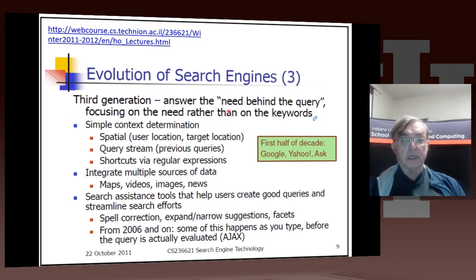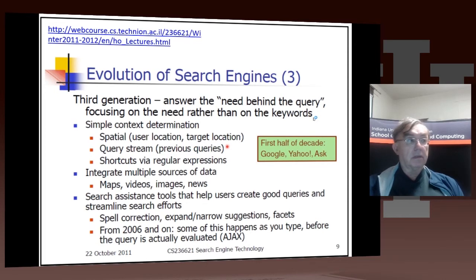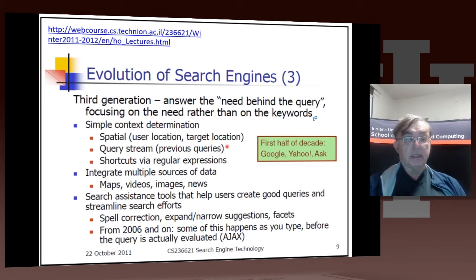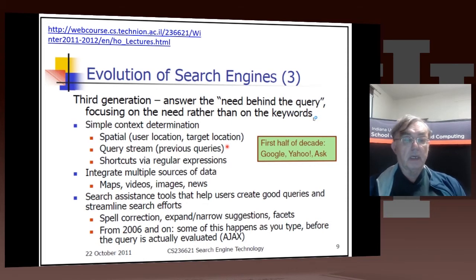The next generation of search engines was really trying to focus on what the user really implied, not just the words in the query. You can get a lot of value added — such as knowing where the user is. When you go to a foreign country, the search engine often changes to correspond to that country, though that's not always what the person wants. You also have previous queries, and you can use regular expressions to try to do more precise matching.